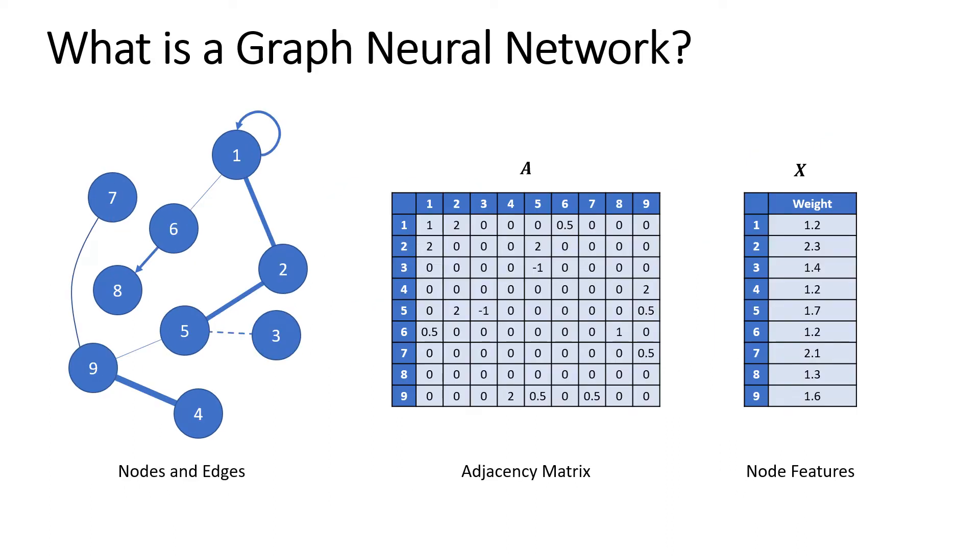We notice then that convolutional neural networks is just a special case of a graph neural network with a specific type of relationship between nodes. Traditional neural networks are also special cases of a graph neural network where there just aren't any connections between the nodes. We define a graph using a set of nodes and edges, a weighted adjacency matrix which describes the relationships between nodes, and a set of node features which describe the individual node properties.